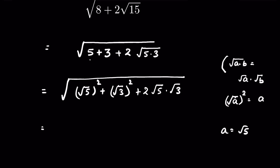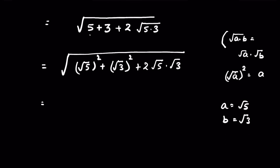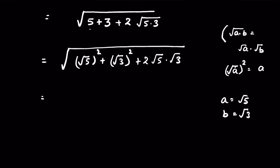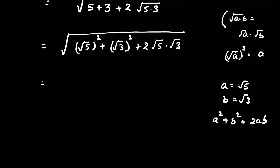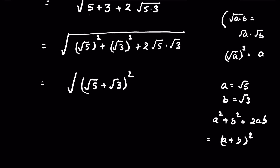If we let a equal square root of 5 and b equal square root of 3, then this expression is in the form a squared plus b squared plus 2ab, which is an algebraic identity equal to (a plus b) whole squared. So this becomes square root of (square root of 5 plus square root of 3) whole squared, all under a square root.